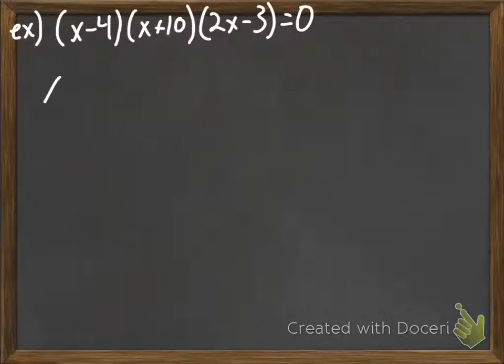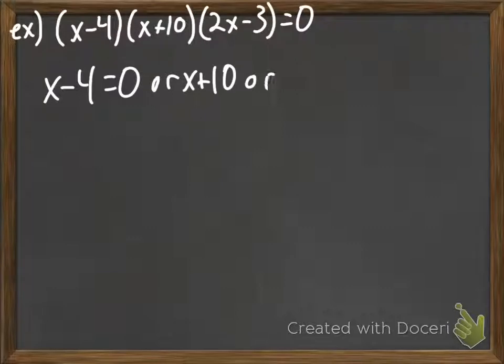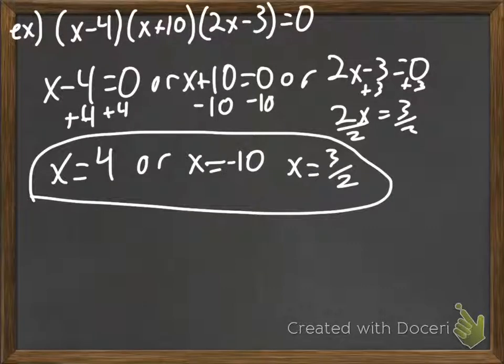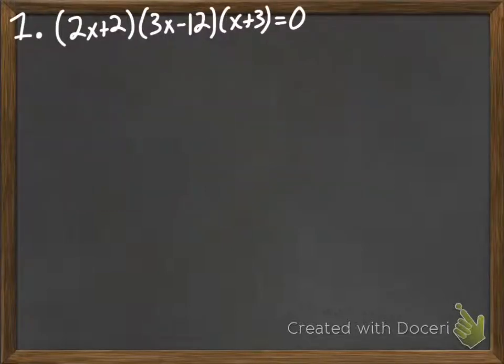Alright, so what we're going to do is we just set x minus four equals zero, or x plus ten equals zero, forgot to equal zero, or two x minus three equals zero. And then we just solve. And we get this as an answer. Forgot my second or.